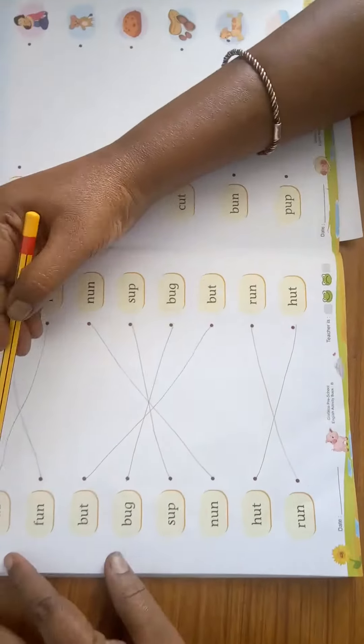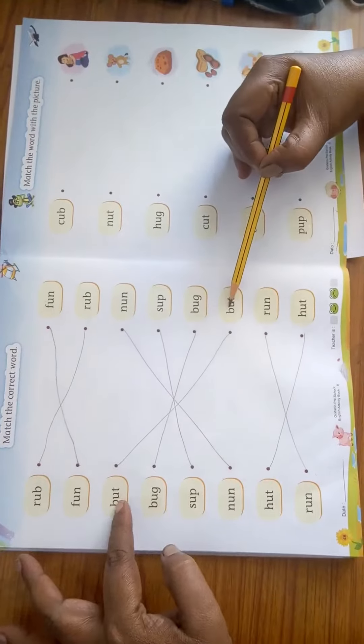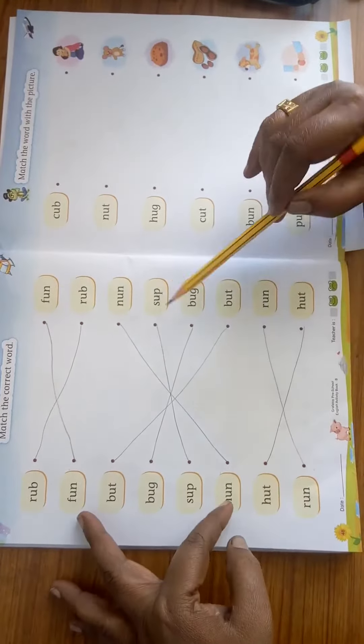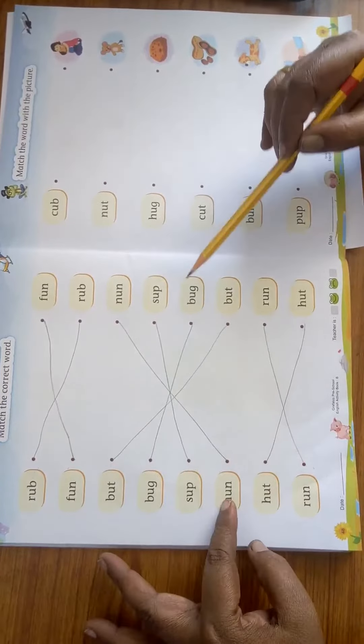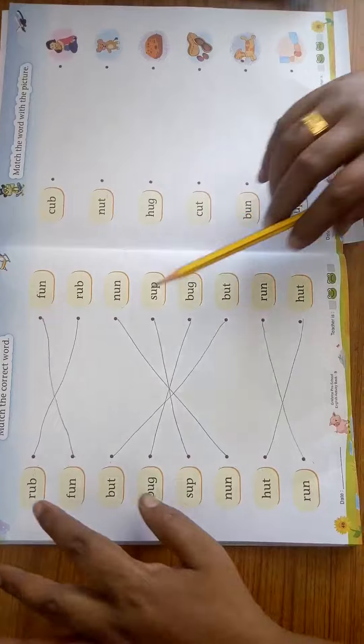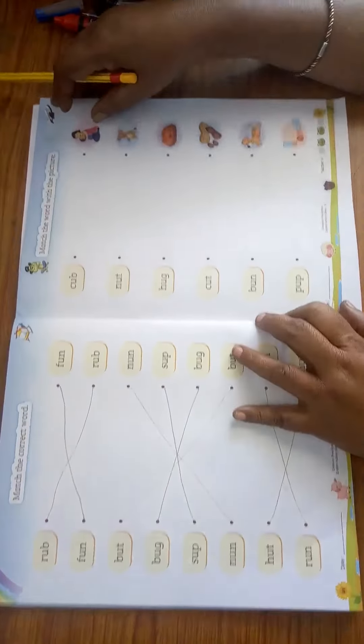Once again I will read for you children. Rub, fun, butt, bug, sup, nun, hut, run. You will see the word and see the jumble word and match correctly. Okay children.